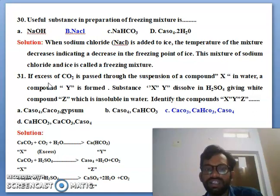And you can see that if excess of carbon dioxide is passed through the suspension of compound X in water, compound Y is formed. So substance X and Y dissolves into sulfuric acid H2SO4 gives white compound that Z is insoluble in water. Identify X, Y, Z. You can see simply calcium carbonate, calcium bicarbonate and calcium sulfate CaSO4. You can see here the calcium carbonate and you can see that carbon dioxide water it is giving you calcium carbonate. You can see the solution.